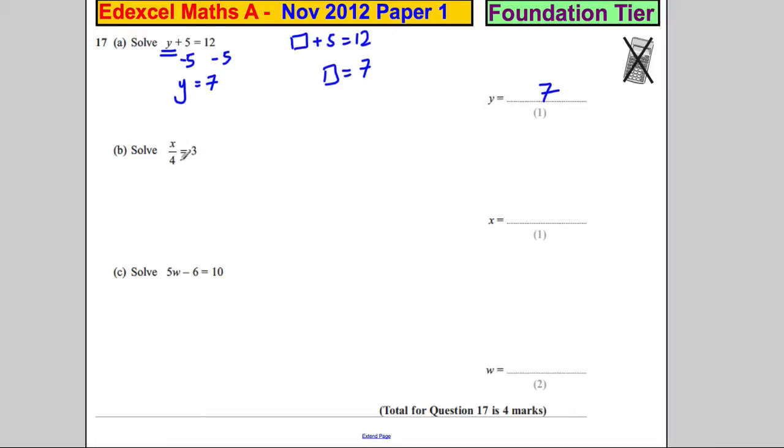Now here's another one. We have x over 4 equals 3. When I say x over 4, what I actually mean is x, some number, is divided by 4 and then you get 3, the answer. To undo the divide by 4, the balance method will tell us to multiply both sides by 4.